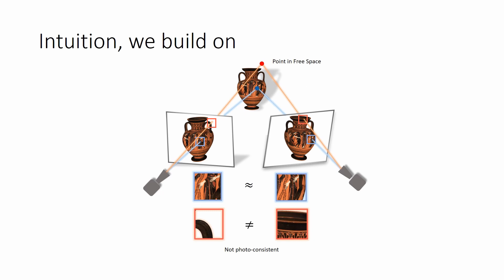However, a point in free space is projected to non-similar regions of the views. Such a point is not photoconsistent. Therefore, photoconsistency gives a strong cue about the object surface.